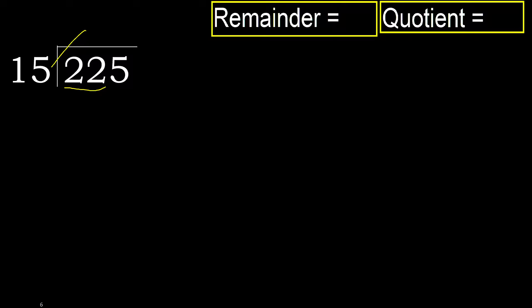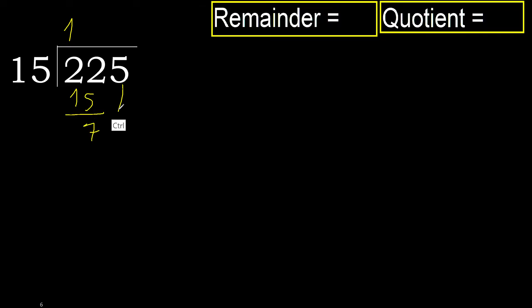15 multiplied by which number is nearest to 22, but not greater? 15 multiplied by 2 is 30, which is greater. Multiplied by 1 is 15, which is not greater. 22 minus 15 is 7. Next.